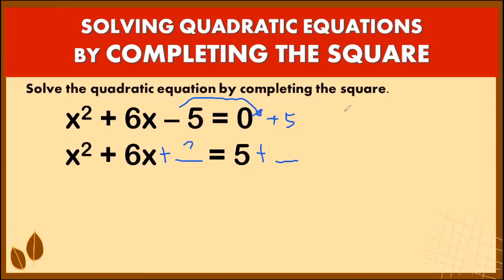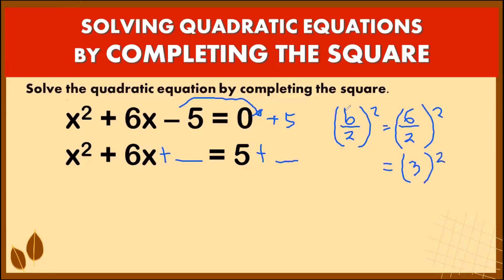To get our third term, we take half of our b, so b divided by 2, and then square it. Our b is 6, divided by 2 gives us 3, and 3 squared is equal to 9. Therefore, our perfect square third term is 9. So we add 9 on the left side and add 9 also on the right side.